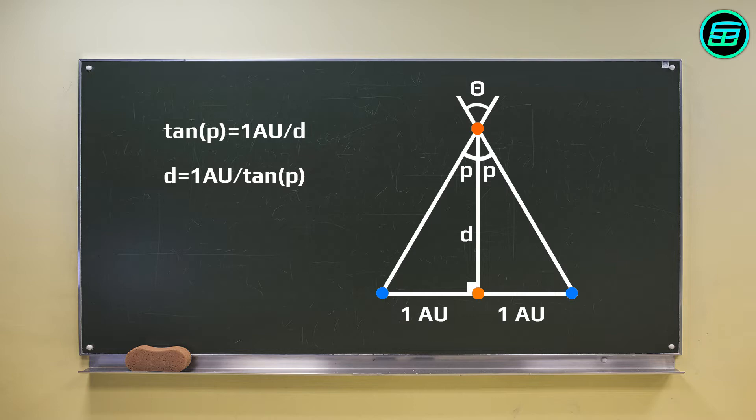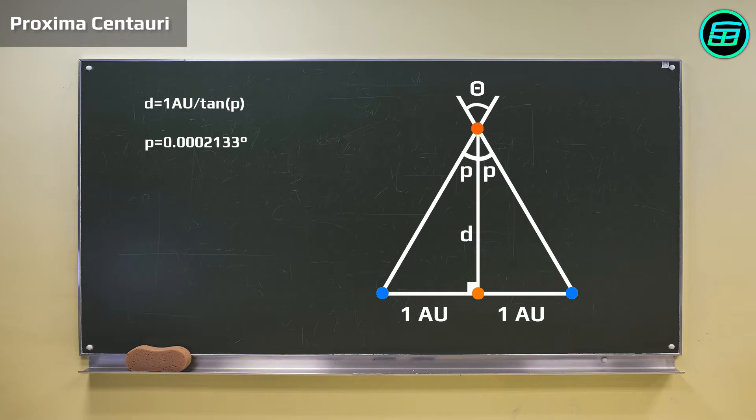Applying the parallax method to nearby stars, the parallax angle will always be very small. For example, the nearest star to the Sun, Proxima Centauri, has a parallax angle of just 0.00021 of a degree.